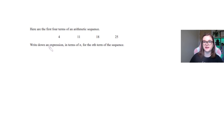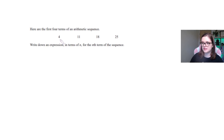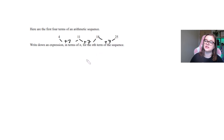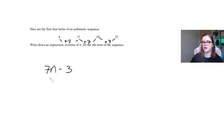One more practice: here are the first four terms of an arithmetic sequence — 4, 11, 18, and 25. Write an expression in terms of n for the nth term. The difference between each term is plus 7, so 7 becomes the number in front of n. Then how do I get from 7 to the first term, 4? I take away 3. So the nth term is 7n − 3. Always the same — easy peasy.